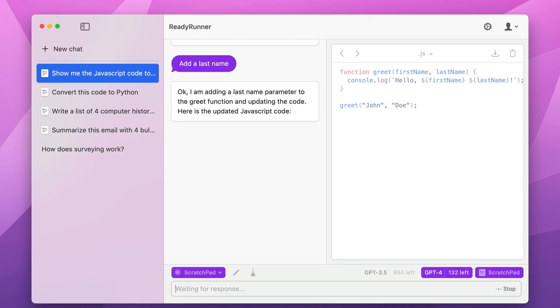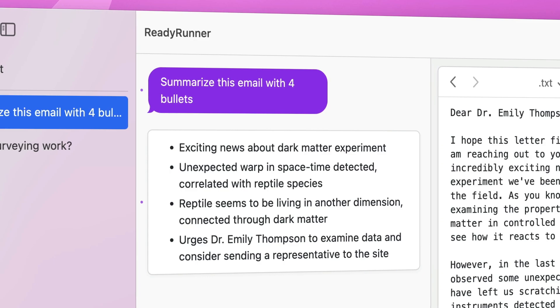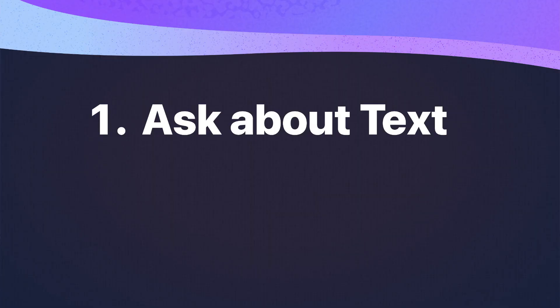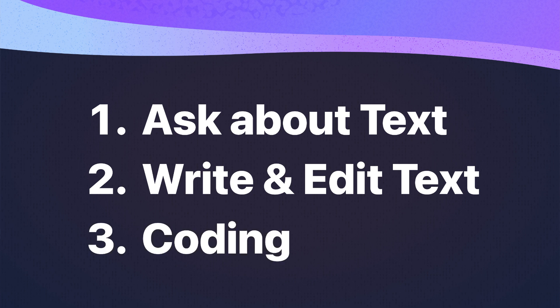The best use case of ChatGPT and similar tools is working with text and working with code. It makes so much more sense to have this type of UI where you have your text on one side and your chat on the other side. In this video, I'm going to show you three really cool use cases of the Scratchpad feature: the first is asking questions about text, the next is writing or editing text, and my favorite — the third one — is writing code with the ReadyRunner Scratchpad.